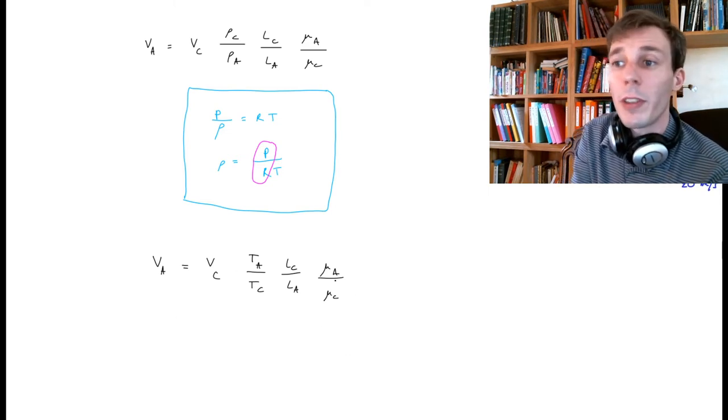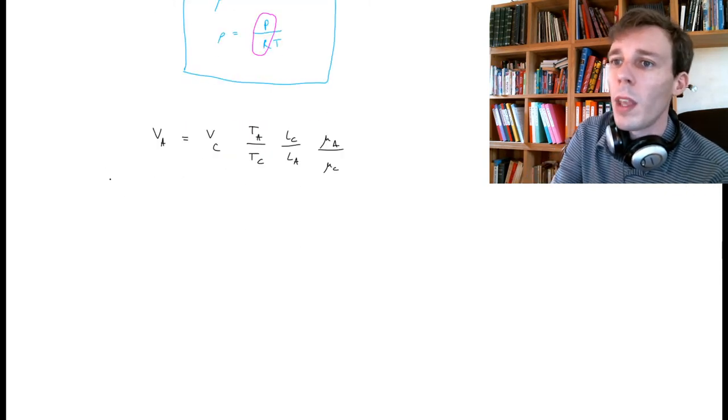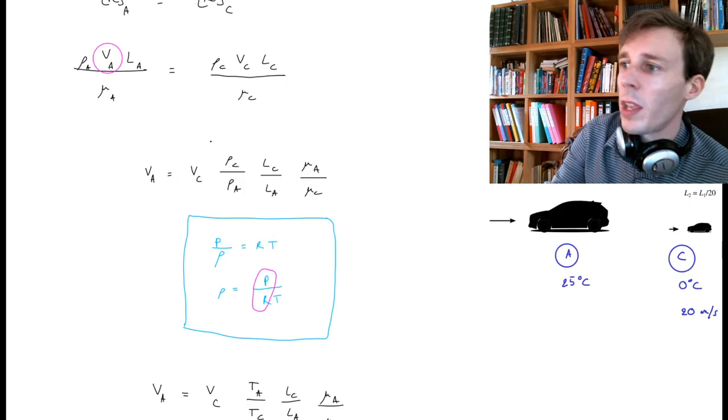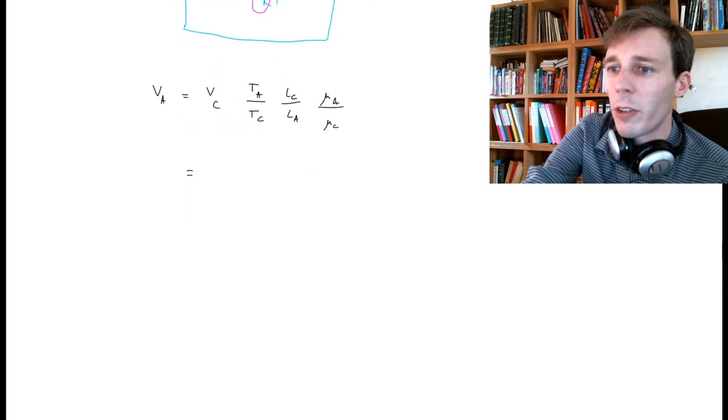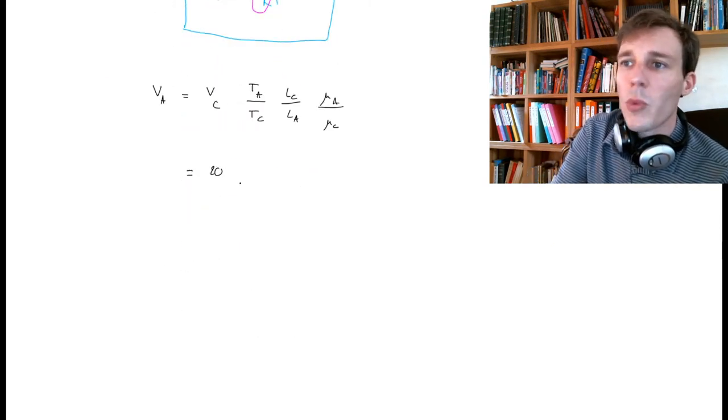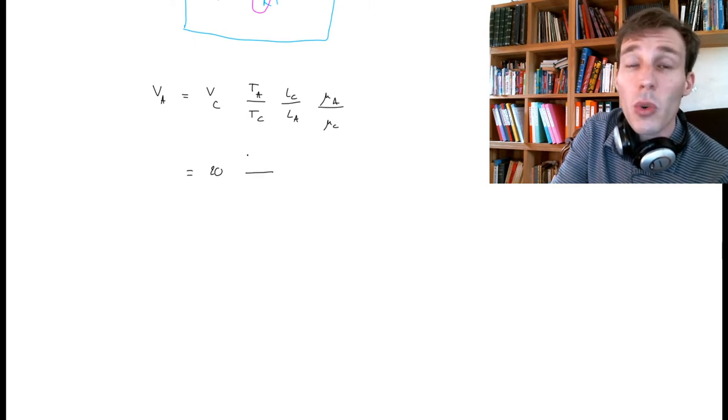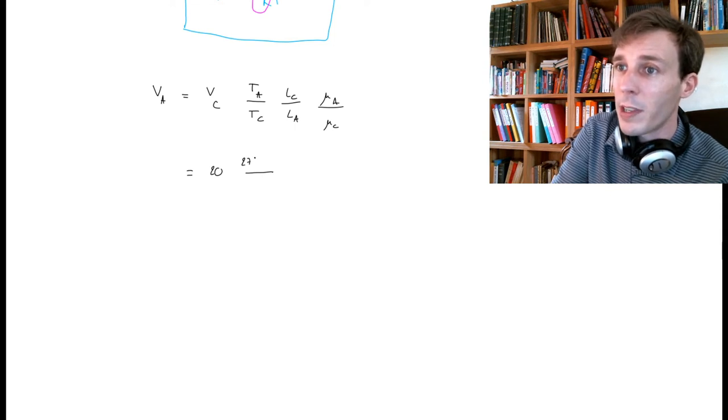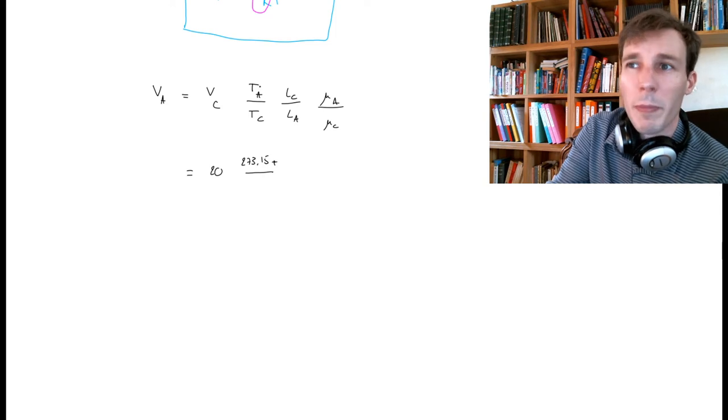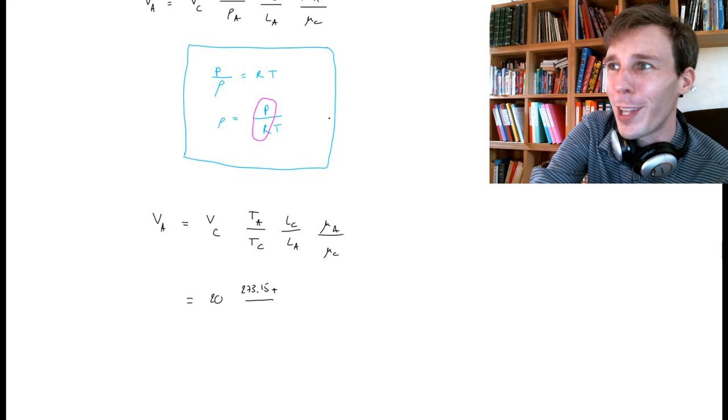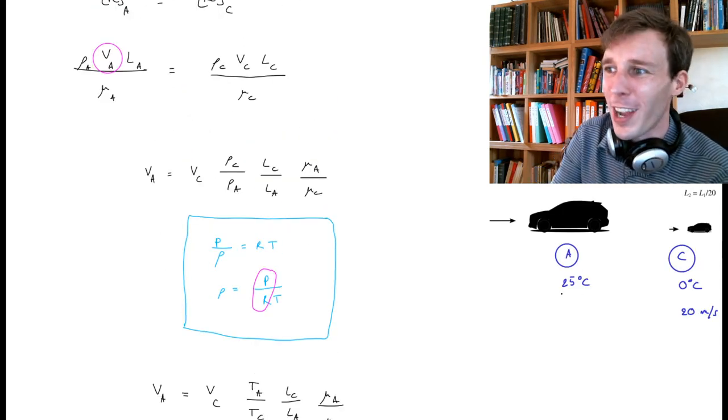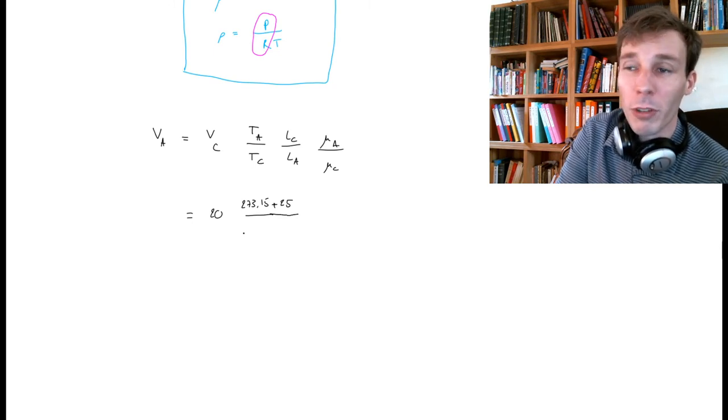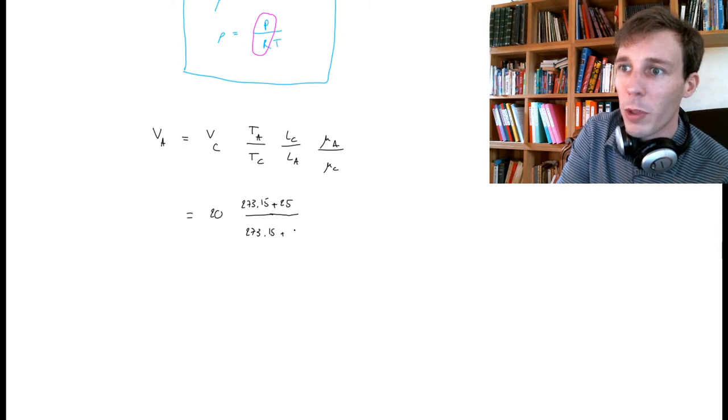All we have to do now is put in the numbers into this equation. V_A is V_C, which happens to be the velocity in the wind tunnel at 20 meters per second. For temperatures, it is very cool in the tunnel, zero degrees, but I want to convert this into Kelvin. T_A is the temperature on the car, which is 25 degrees, so 273.15 plus 25. On the bottom, I have the temperature inside the tunnel, 273.15 plus zero.